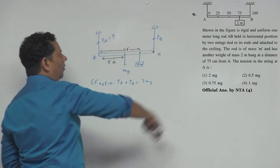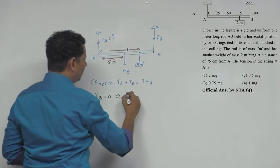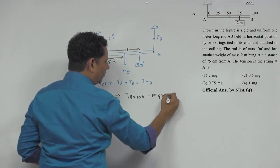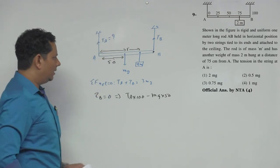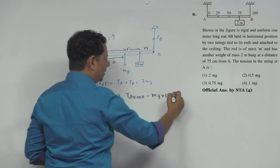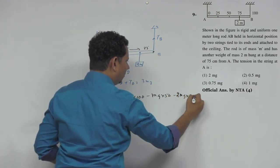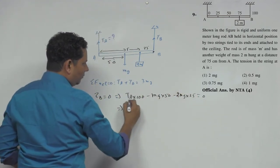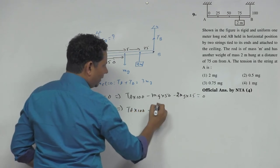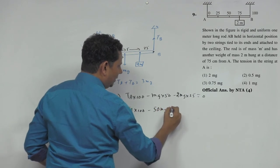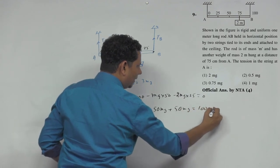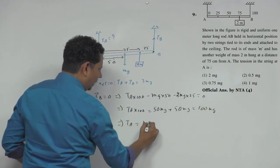Taking counterclockwise as positive, TA acts upward at A, which is 100 cm from B, giving +TA × 100. The rod's weight Mg acts downward at 50 cm from B, giving −Mg × 50. The hung mass 2M acts downward at 25 cm from B, giving −2Mg × 25. Setting the total equal to zero: TA × 100 = 50Mg + 50Mg = 100Mg, which implies TA = Mg.